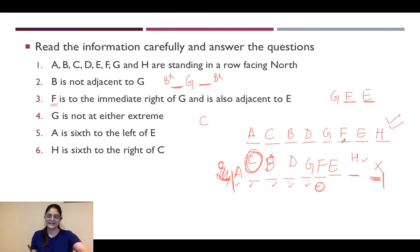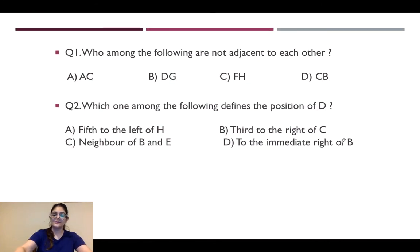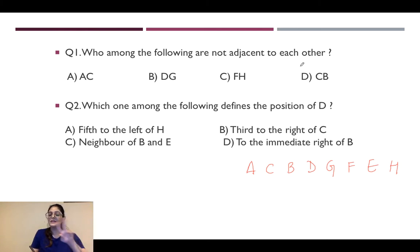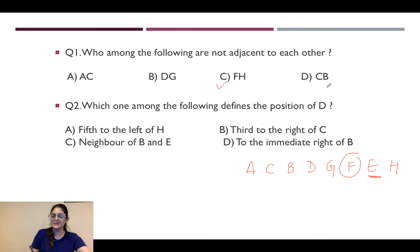So our arrangement is A, C, B, D, G, F, E, H. Now let's answer the questions. The first question asks: who among the following are not adjacent to E? F and H are not adjacent to each other — F and H have E between them, so they are not adjacent to each other. Options A and C are together, B and G are together, C and B are together. So the correct answer is option C: F and H are not adjacent.